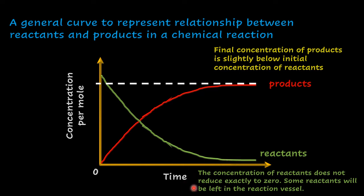The curve representing reactants does not touch the horizontal axis — it only goes very near it, showing that some reactant remains. Both curves flatten out at a particular point, at time t. This is because the concentration of products does not increase beyond a certain point and the concentration of reactants does not reduce further, showing that the reaction has stopped.